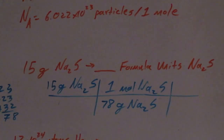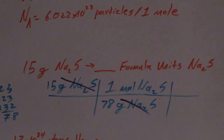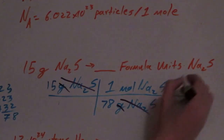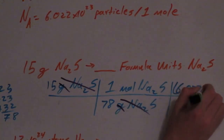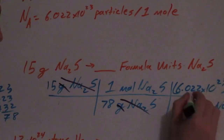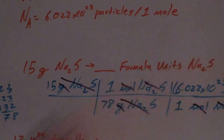Grams of sodium sulfide cancel with grams — that's very nice. But I'm asking about formula units, not moles. So to solve this problem, going from mole island to particle island, you are going to multiply by 6.022 times 10 to the 23rd formula units per one mole. Both are sodium sulfide. Moles cancel with moles, Na₂S cancels with Na₂S. All you have to do is follow the flow chart and plug it into your calculator.